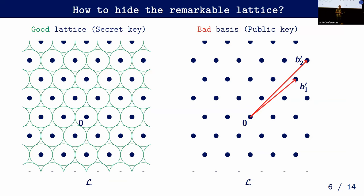But now we have a problem: if we want to do encryption this way, we have a good lattice but it's not secret anymore — we picked a very special lattice and everyone knows it. So even if you give some bad basis publicly, everyone knows which lattice you're using. People have tried to hide this good lattice by introducing randomness or permuting coefficients, but all these methods have been broken by abusing this ad hoc construction. The only thing you can actually do if you want to keep the geometry correct is to apply an isometry to the lattice.